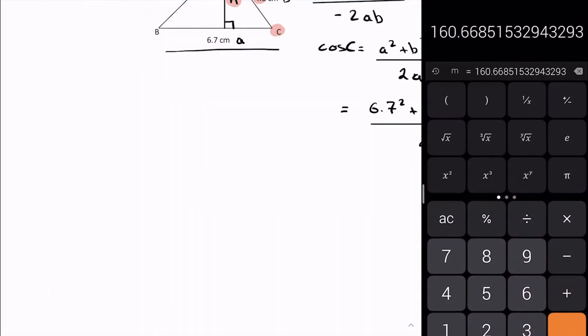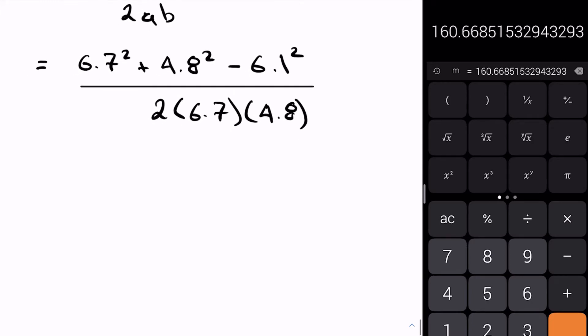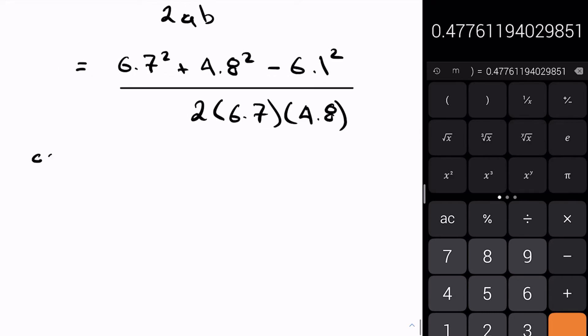Let's take a look at these numbers. So 6.7 squared plus 4.8 squared minus 6.1 squared equals that, and we're going to divide by, I'll put in some brackets, 2 times 6.7 times 4.8 close bracket. And there's my number, so cos C is equal to 0.4776.